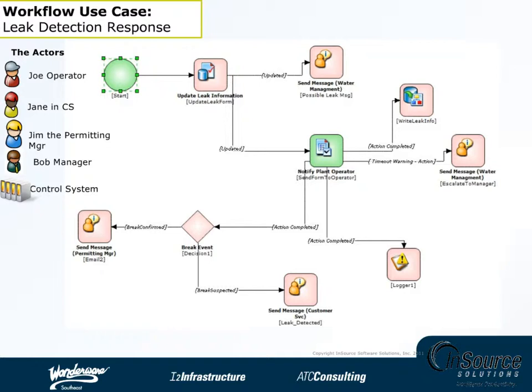We also see a list of actors. These are people who are involved in the workflow process. We have Joe who is an operator, Jane in customer service, Jim in permitting, and Bob who is the general manager.